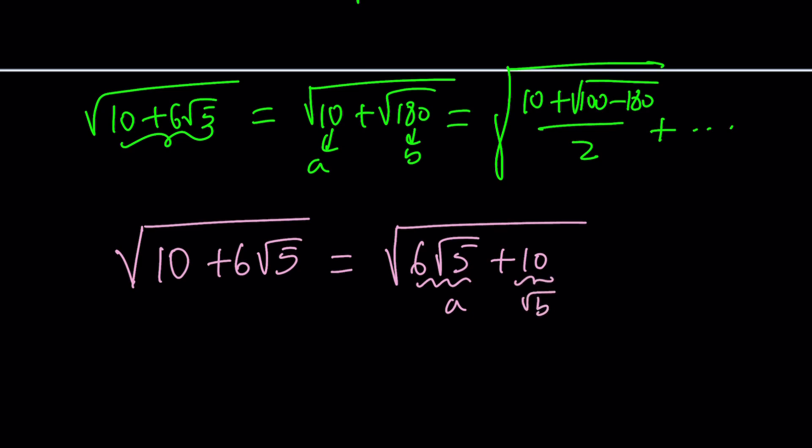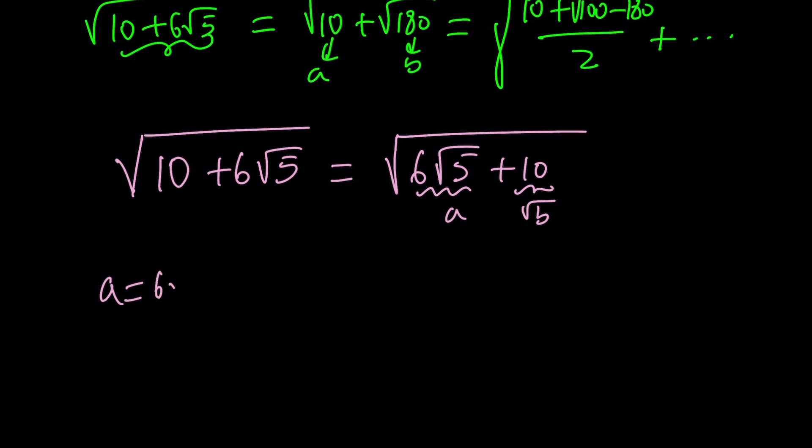If a is equal to 6 root 5, a squared is going to be, because we need it for the formula, 36 times 5, which is 180. And b is just going to be 100, right? Because square root of b is 10. Remember that?